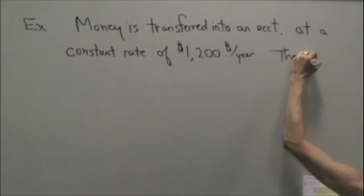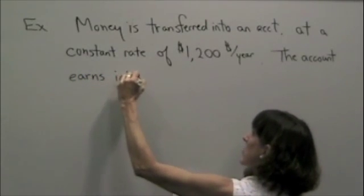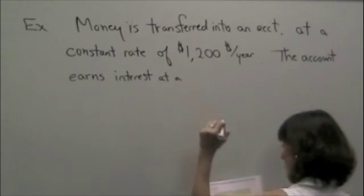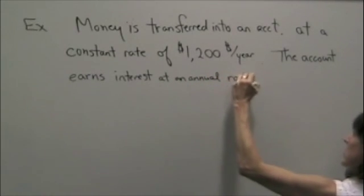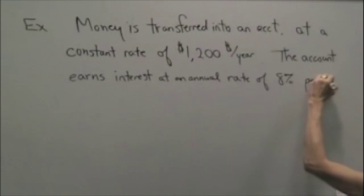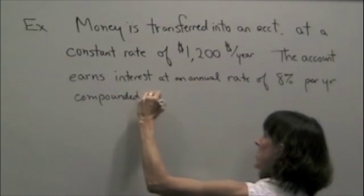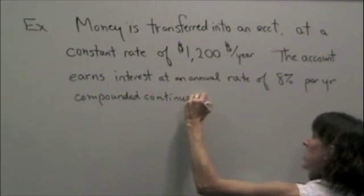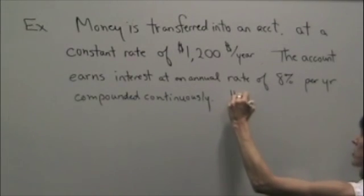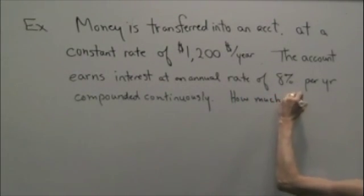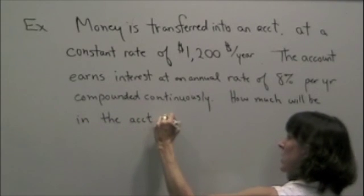The account earns interest at an annual rate of 8% per year, compounded continuously. How much will be in the account at the end of two years?